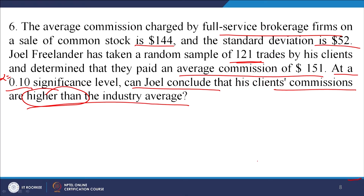How would you proceed for this? This is a case of a one-sample test. First of all, let us frame the null hypothesis and alternative hypothesis. The null hypothesis is that the average brokerage commission is 144 dollars, and the alternative hypothesis is that it is more than 144 dollars. This is how you should frame the null and alternative hypotheses.